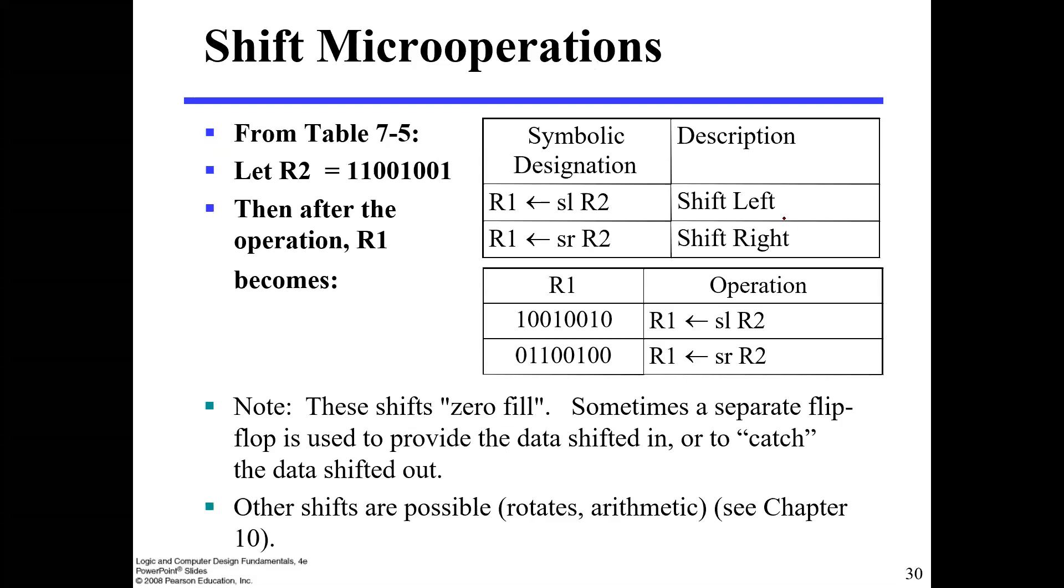Basically we have two types of shift, but there are more. We have shift left and shift right. How we denote the shifting: we can write R1 will take the value of R2 shifted left.